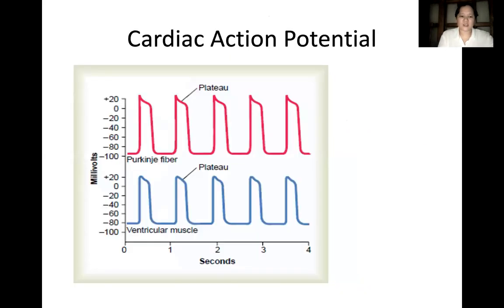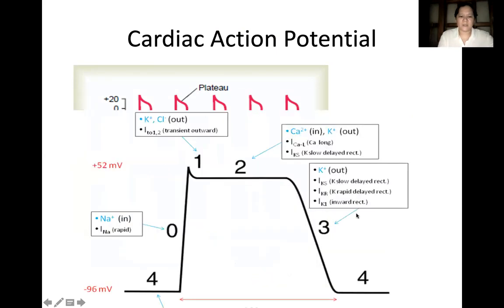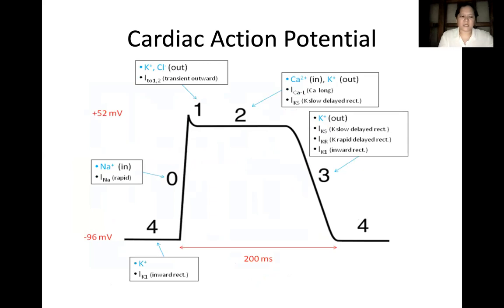This is the cardiac action potential, which has a plateau. This is the cardiac action potential of the Purkinje fibers, and the blue one is the cardiac action potential of the ventricular muscle. The action potential is composed of phases. It will start at phase four, which we call the resting membrane potential. The normal resting membrane potential in the ventricular myocardium is about 85 to 95 millivolts. The membrane is permeable to potassium.